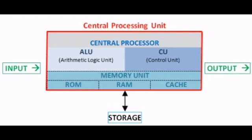The first part of the CPU is the ALU — arithmetic and logic unit. All calculations in a computer are done by the ALU. It performs arithmetic calculations like addition, subtraction, multiplication, and division. It also performs logical operations like finding greater than or smaller than.